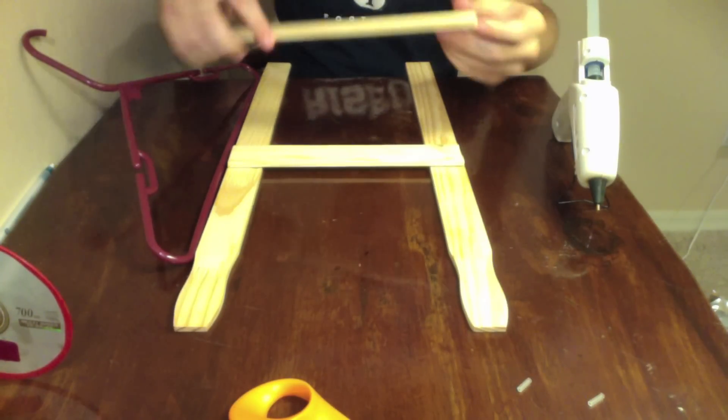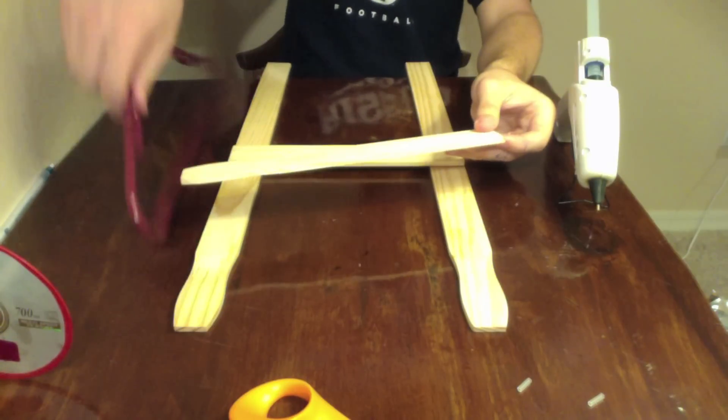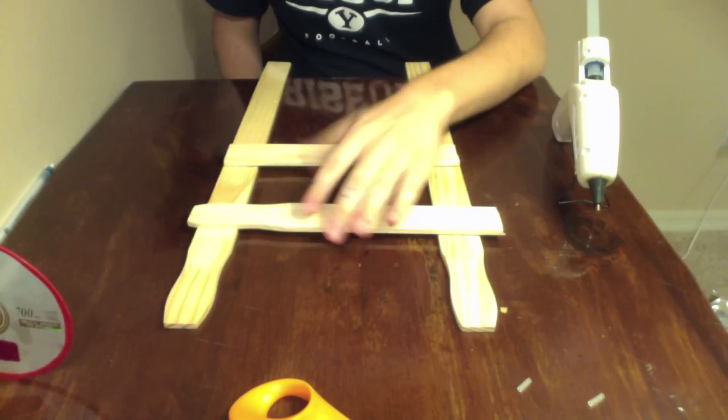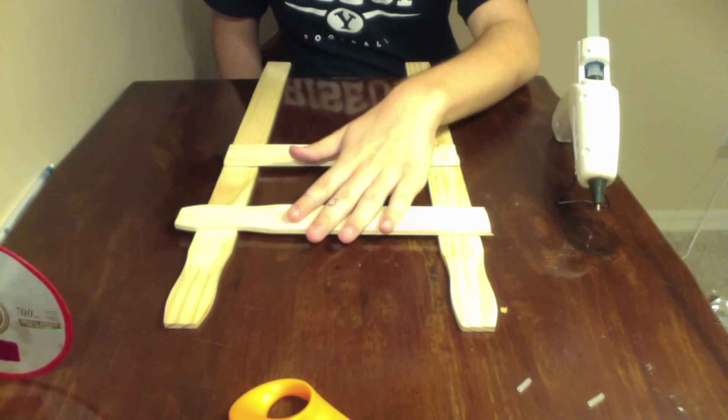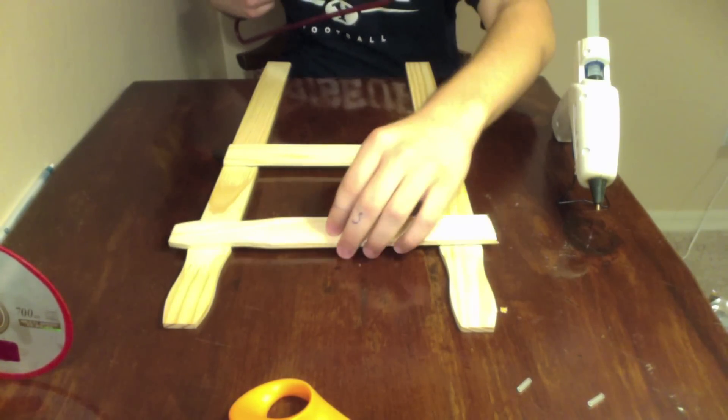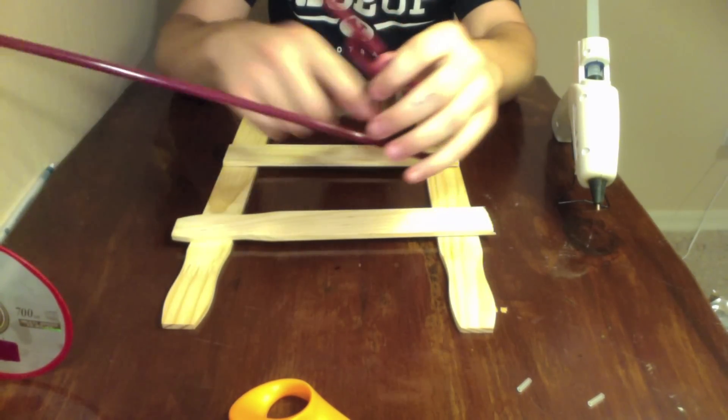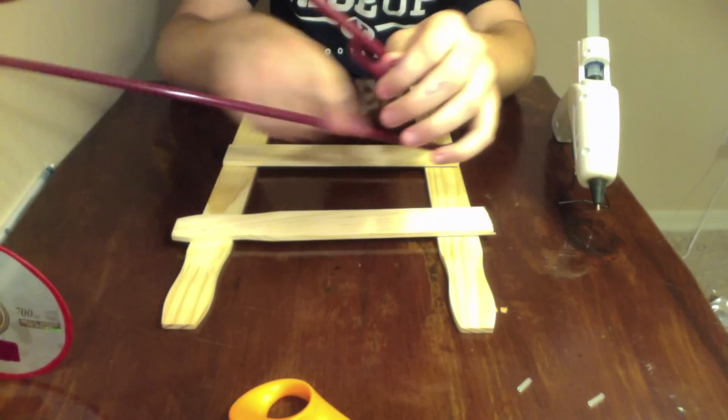Okay, now that this is dry, we're going to want to take the other half of the stirring stick and put it further up the frame. What you're going to use the bottom of the hanger for is a bigger lever arm for your mousetrap.